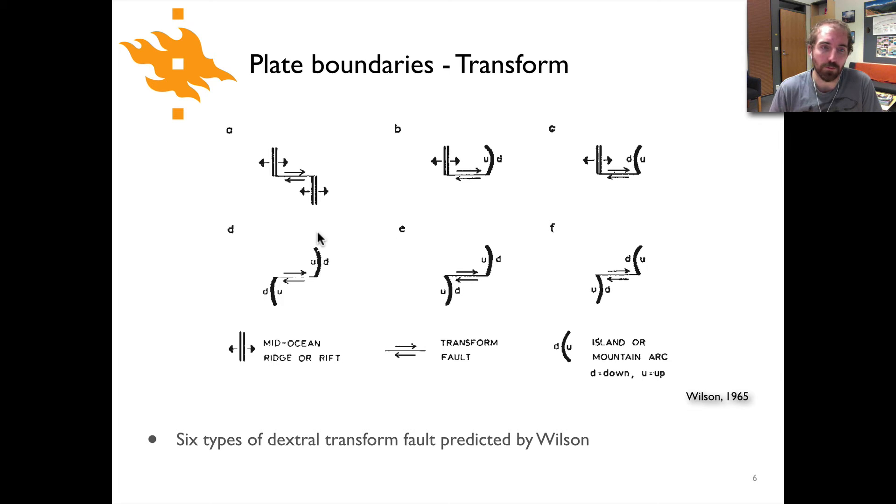The top left panel is what's kind of most common—that's the ridge that's offset by a transform. But of course there are other combinations that are possible. For instance, in B we see a ridge and a subduction zone and a transform fault that's running along the edge of that plate.